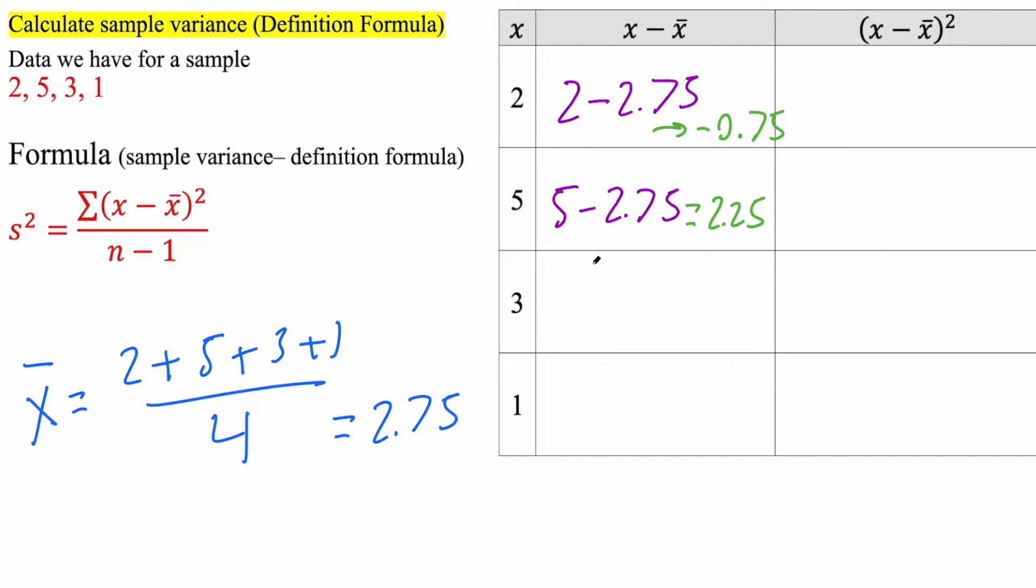Likewise with this, we do 3 minus 2.75, which we're going to get 0.25. And the last one, 1 minus 2.75, and we're going to get negative 1.75.